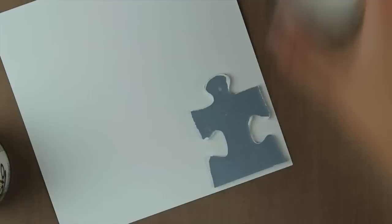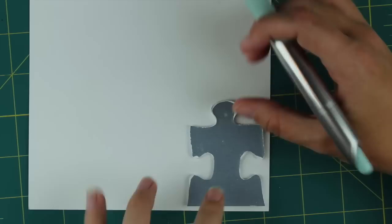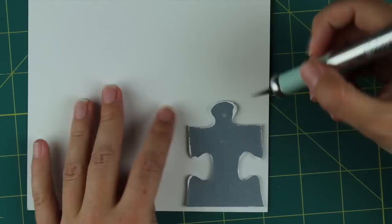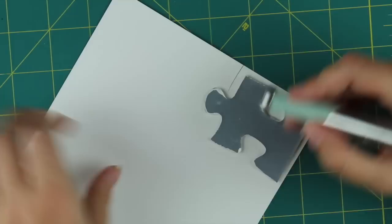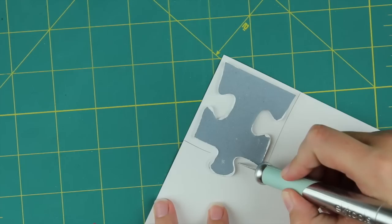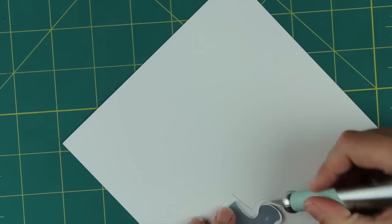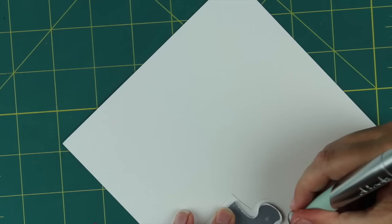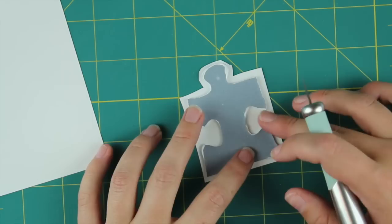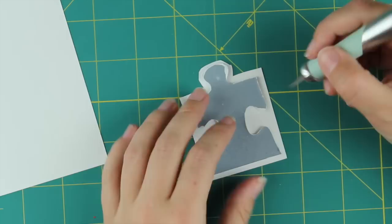After I have let it dry a bit so that it's more stuck to the paper, I take my cutting knife onto a cutting board and just cut the puzzle piece out of the paper. I leave a couple of millimeters of paper around it so I can cover the corners of the puzzle piece a little bit easier.